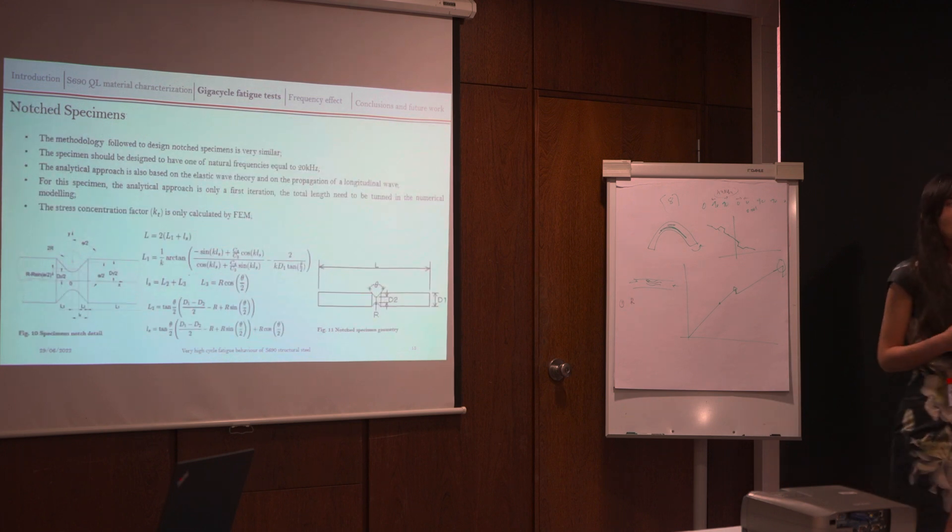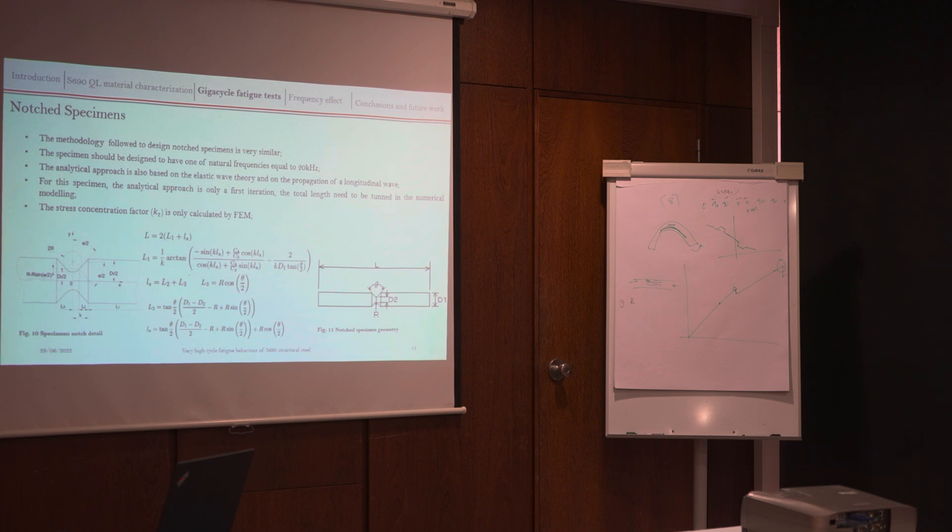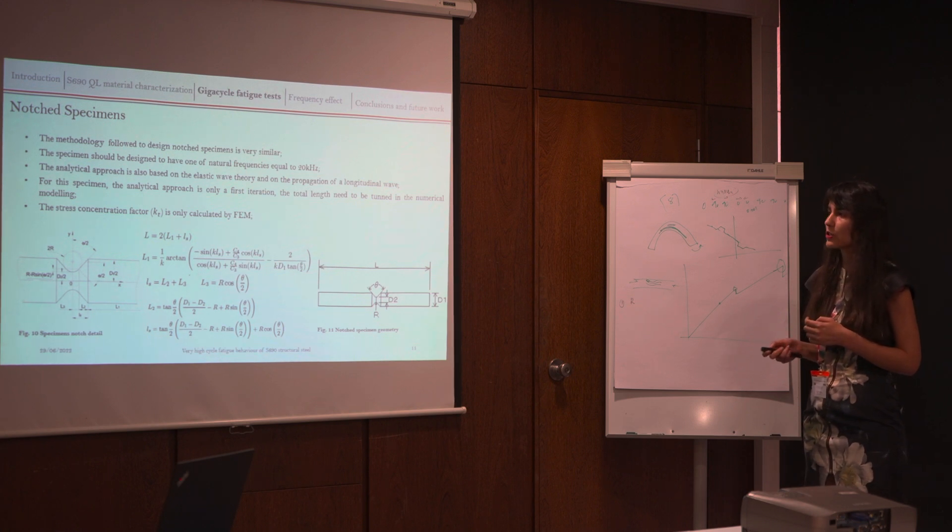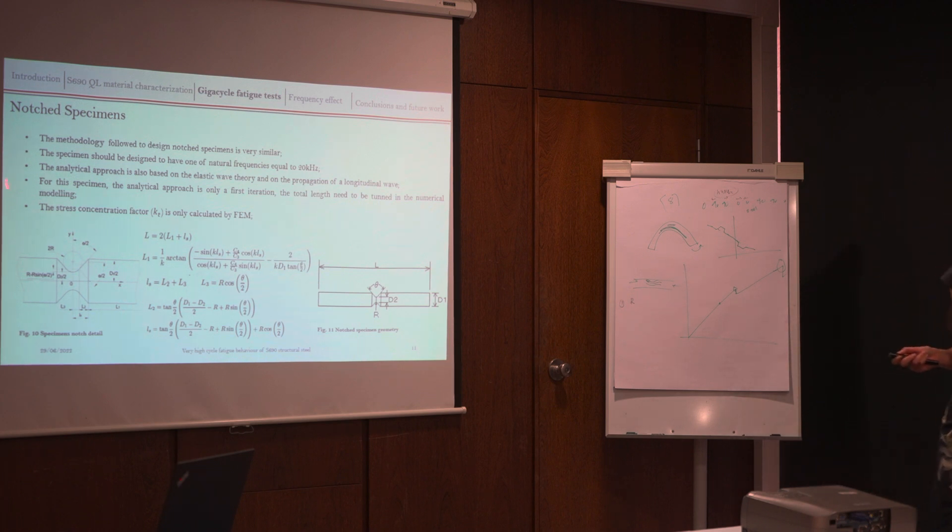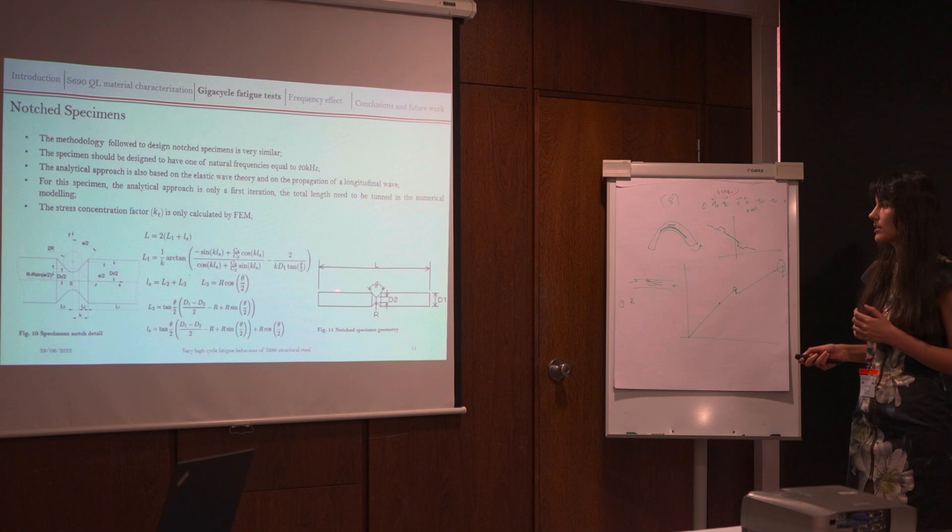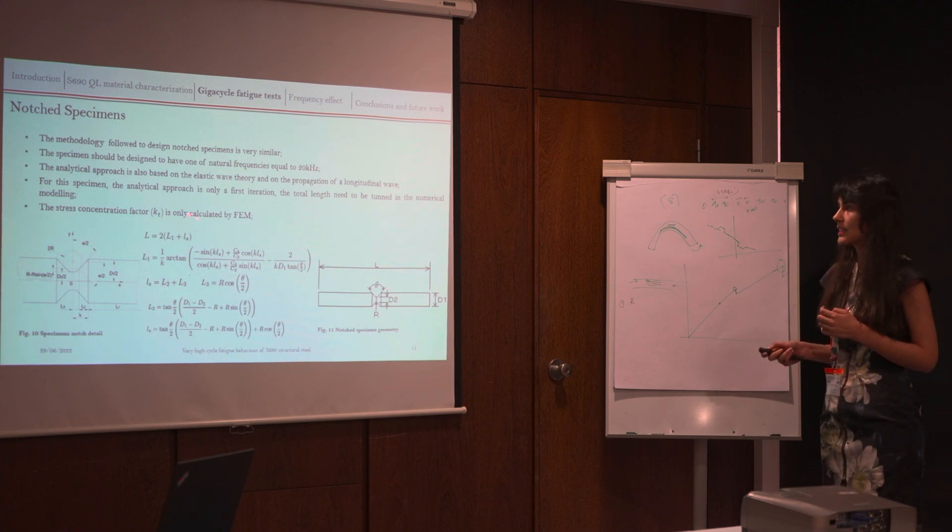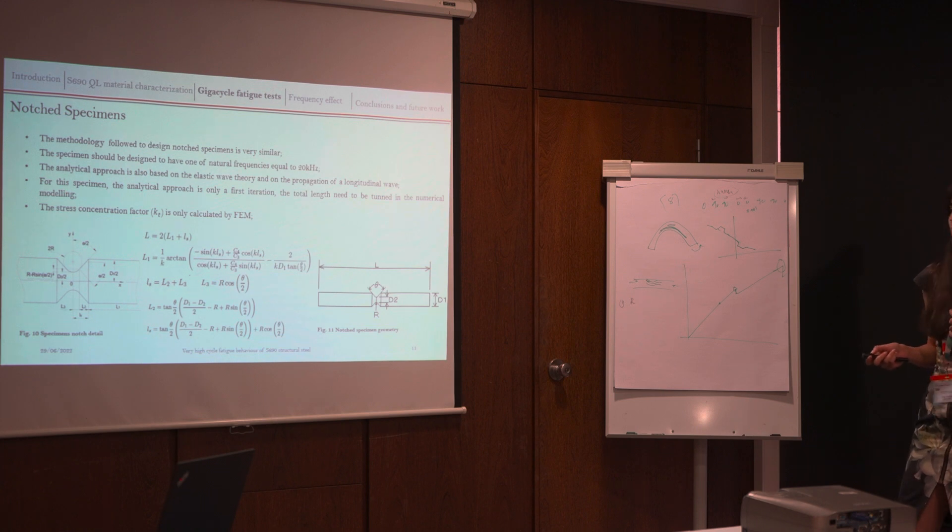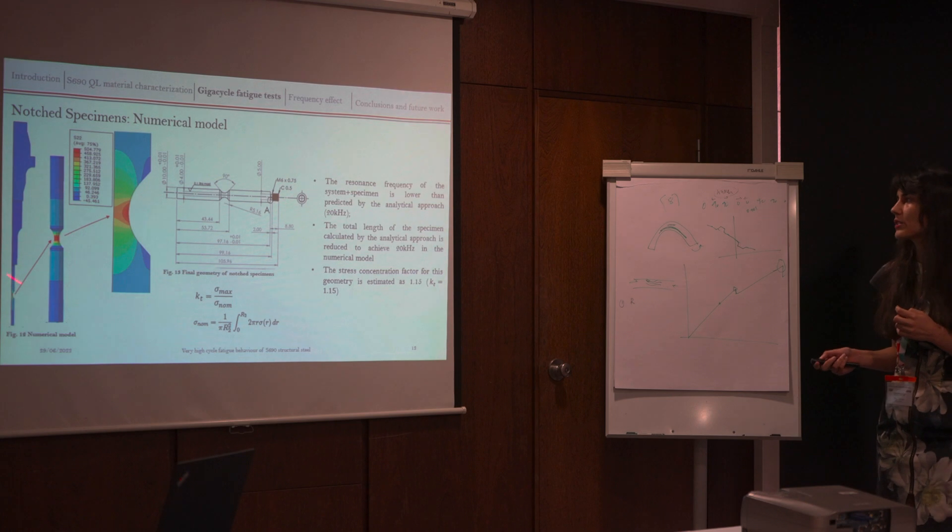So after that we decided to also analyze and test some notched specimens. We are at the beginning. At this point we don't have exactly an S-N curve yet, but I will explain our procedure to design this kind of specimens. We needed to develop also an analytical approach. For this case it's more difficult because this kind of notched specimen is very difficult to approximate it to a one-dimensional problem. So in fact, this analytical approach can give us a first iteration for our geometry, and we observe that we need to tune the final length through our finite element model, as you can see here. So as a first step, we use this formulation that is based on the wave theory of propagation, and we can calculate the main properties of the notch, and then we need to tune the length of the specimen to test it.